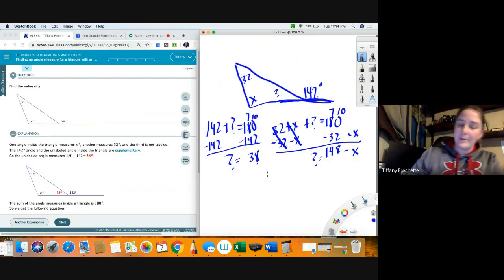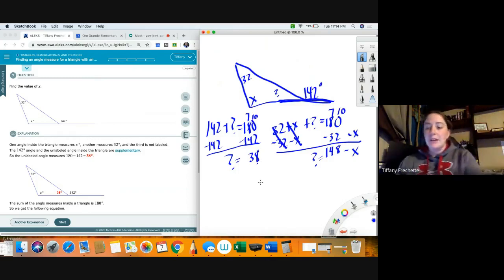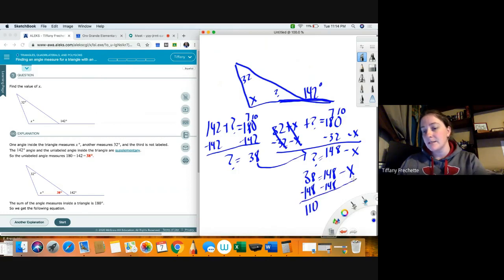Oh I made that a little harder than I wanted to make it. So if I know that this is 38 here, I can go 38 equals 148 minus X, and then I can subtract the 148, and I end up with negative 110 equals negative X, so I end up with 110 equals X.